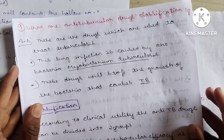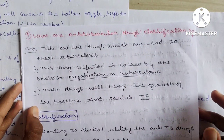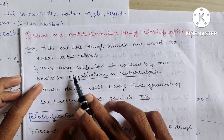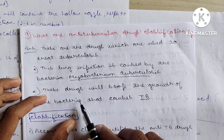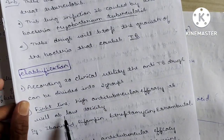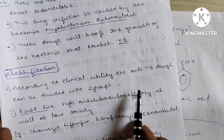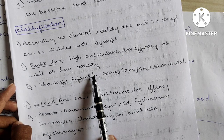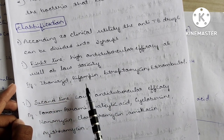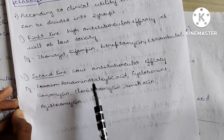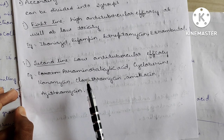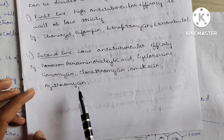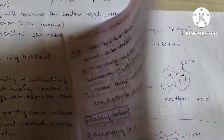Question 9: What are anti-tubercular drugs? These are drugs used to treat tuberculosis, a lung infection caused by Mycobacterium tuberculosis. Classification by clinical utility: First-line drugs — high efficacy and low toxicity: isoniazid, rifampicin, streptomycin, ethambutol. Second-line drugs — lower efficacy: para-aminosalicylic acid, cycloserine, kanamycin, clarithromycin, amikacin, azithromycin.